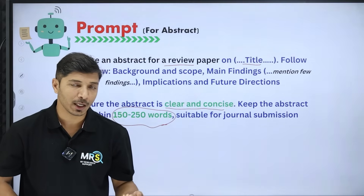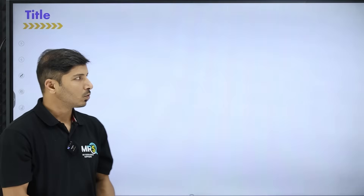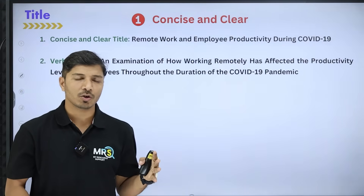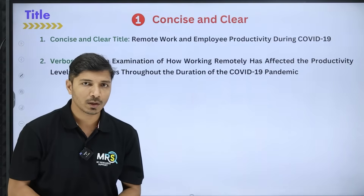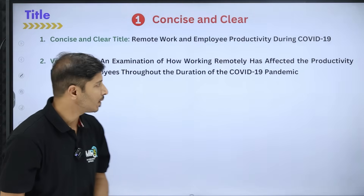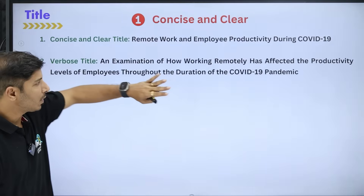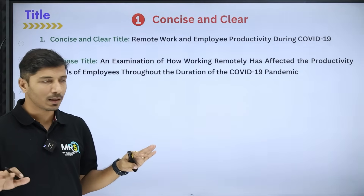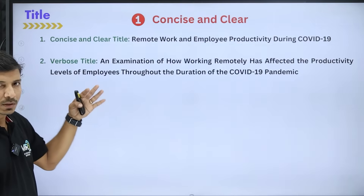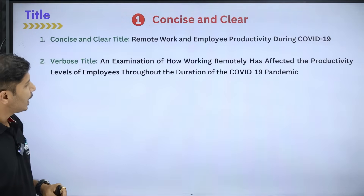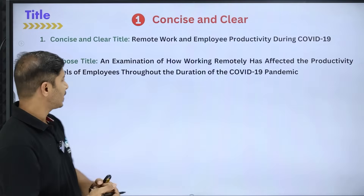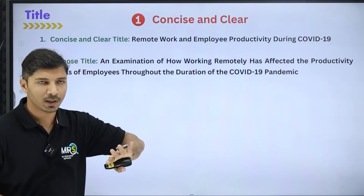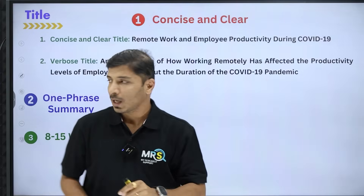Once you are ready with your abstract, you can move ahead to writing an effective title. The first important point: your title should be concise and clear. Your title will be the first impression of your overall manuscript and plays a vital role during the preliminary stage of journal publication. For example, 'Remote Work and Employee Productivity During COVID-19' is clear and concise, while 'An Examination of How Working Remotely Has Affected the Productivity Levels of Employees Throughout the Duration of the COVID-19 Pandemic' is verbose and not specific.